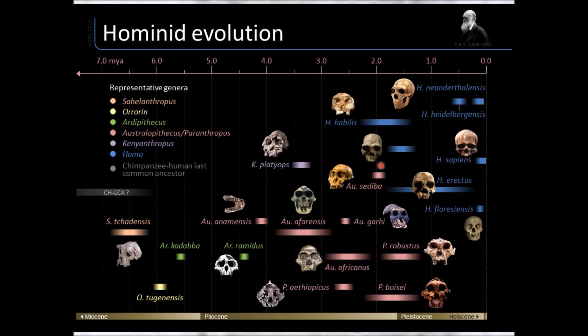Sediba is a very interesting late-surviving australopithecus with tiny little brains and long spindly bodies. It may be that sediba led to the body type of Homo habilis, while garhi led to the brains of habilis. It seems sediba was developing a body to deal with the climate changes happening around the advent of genus Homo — we'll talk about that later.